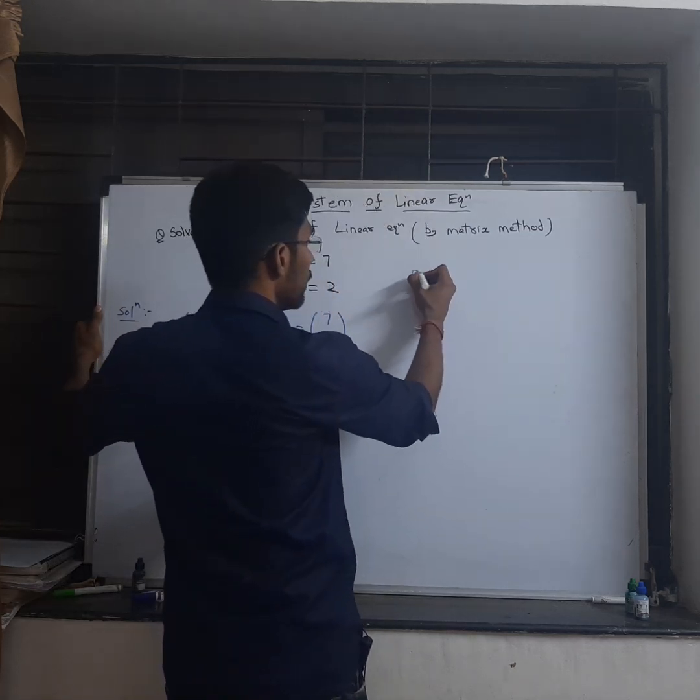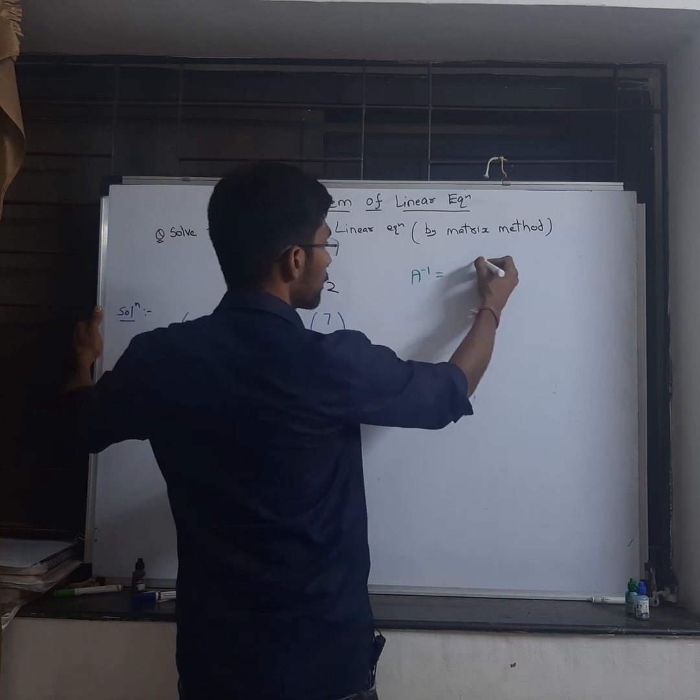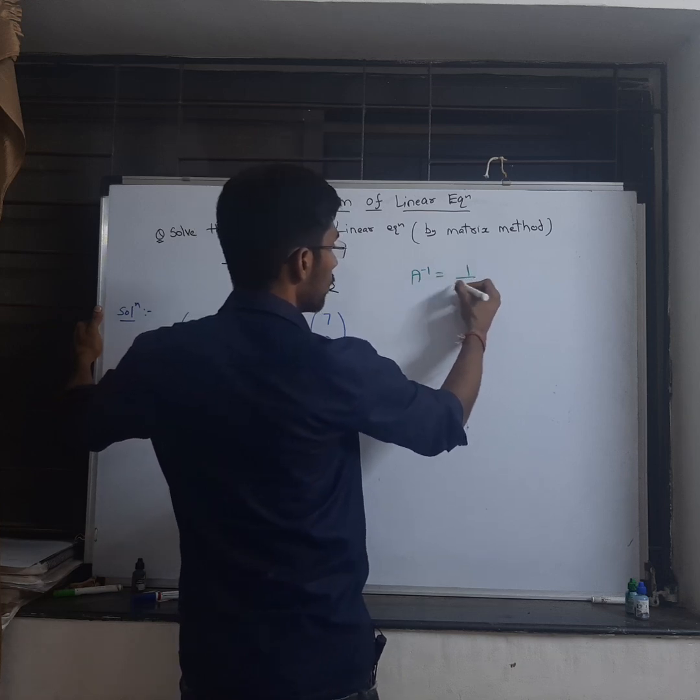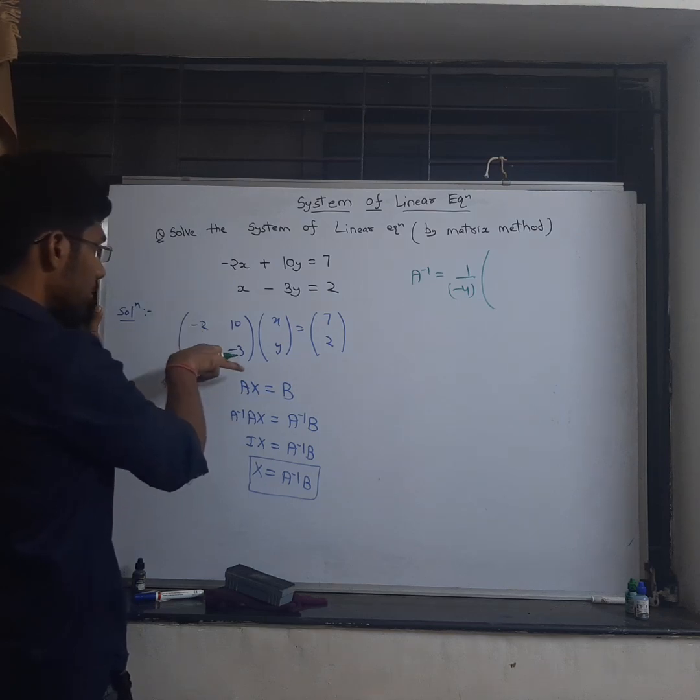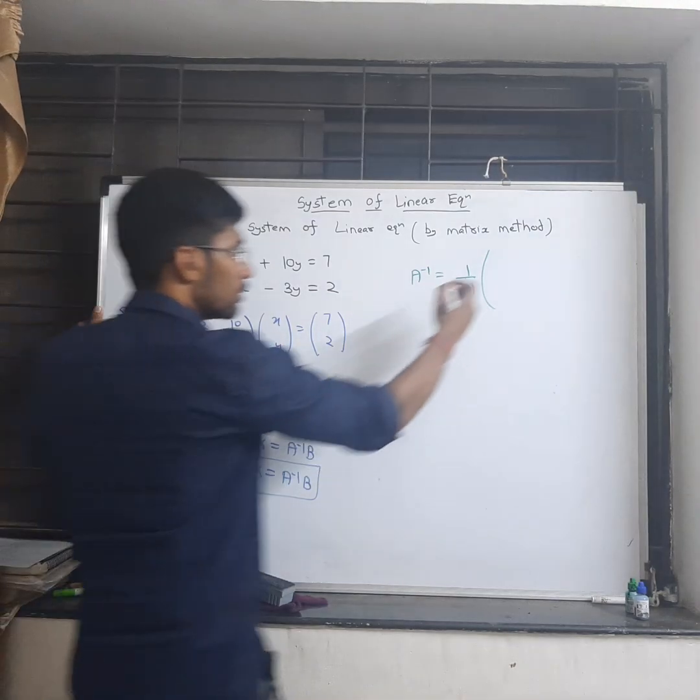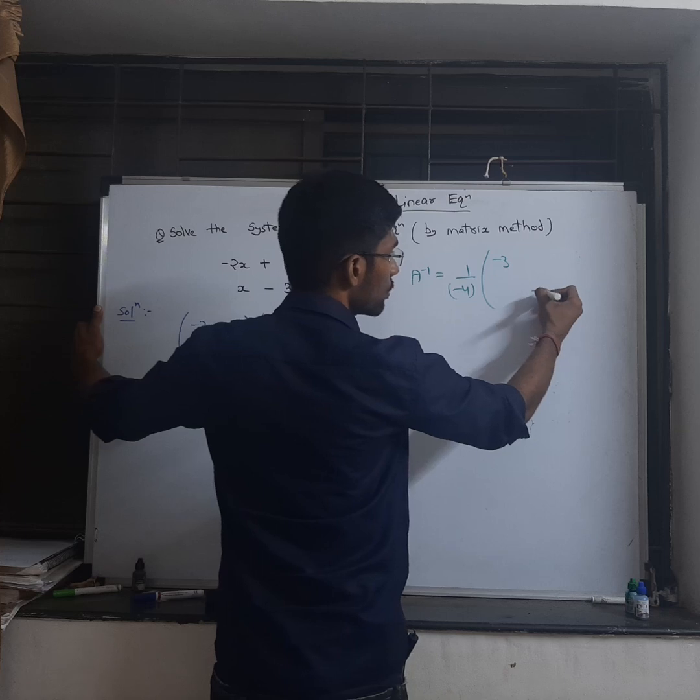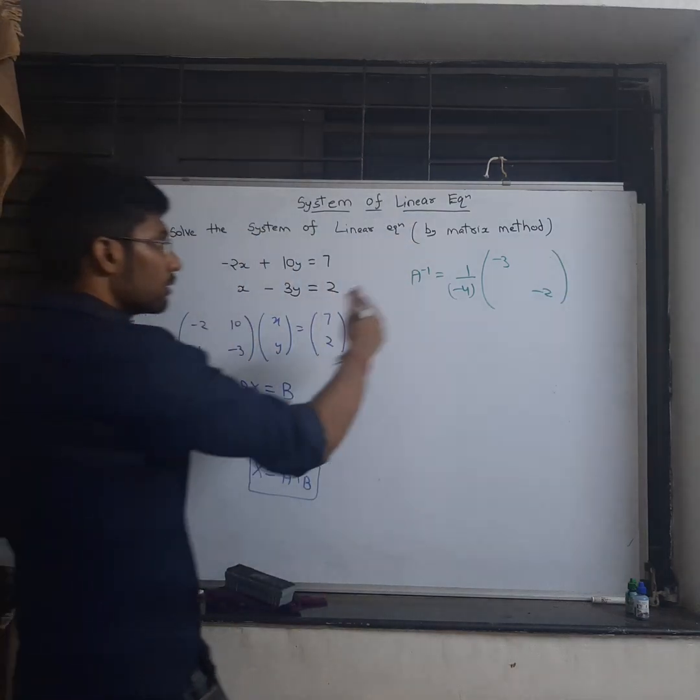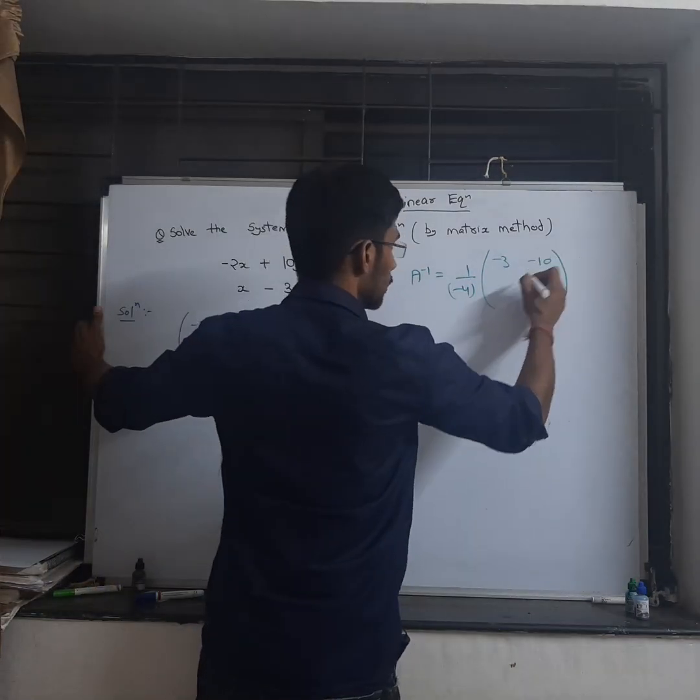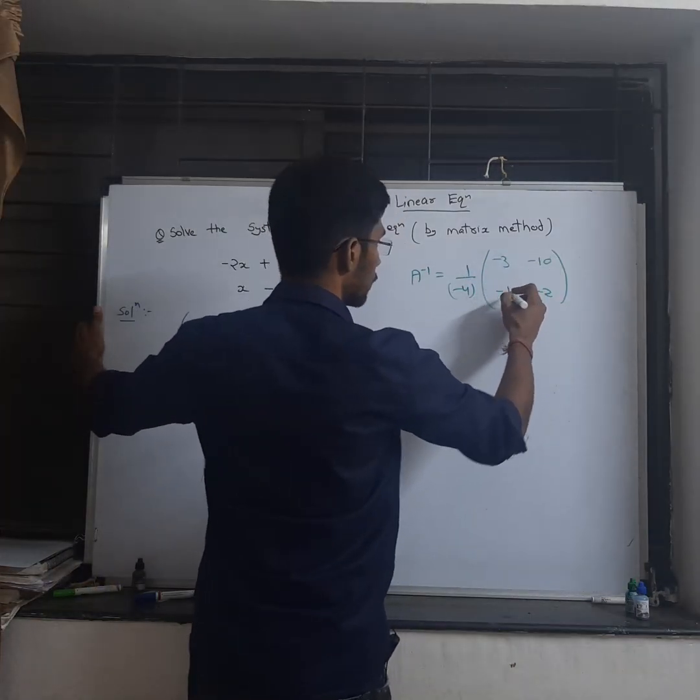So my inverse is given by 1 upon minus 4. Exchanging the principal diagonal elements minus 3, minus 2, and multiplying minus sign to the off diagonal elements, this is minus 10 and this is minus 1. So this is my inverse.